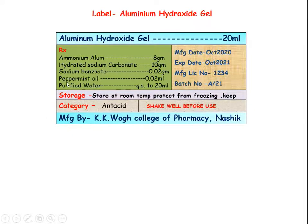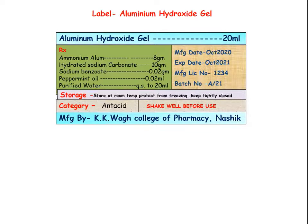Now we will see how to prepare the label. The label should mention the name of the formulation and quantity — Aluminium Hydroxide Gel 20 ml. It should mention the amount of each ingredient taken to prepare the 20 ml formulation. Then mention manufacturing date, expiry date, manufacturing licence number, batch number, and storage conditions.